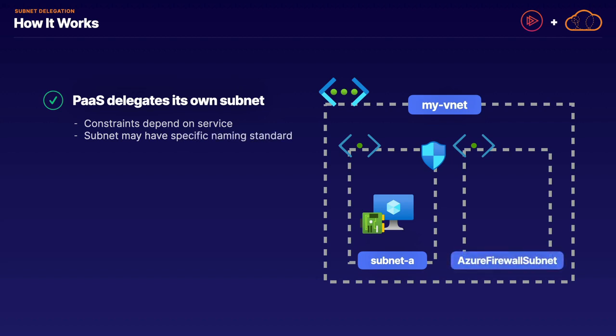Some external managed services may have a specific naming standard for that subnet. As we'll learn about Azure Firewall later on in this course, Azure Firewall must sit inside of a delegated subnet called Azure Firewall Subnet. Also, depending on the service, that service may be the only resource allowed to exist inside of that subnet. Some delegated subnet services can have other virtual machines exist in that subnet, while others have to be the only resource in that subnet.